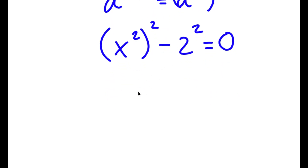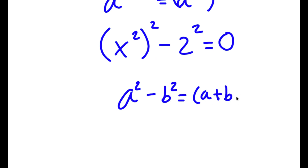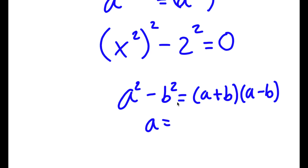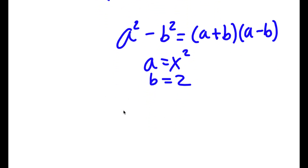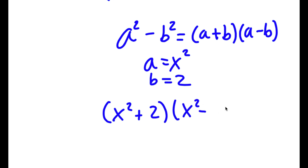Now if I have something in the form a squared minus b squared, this is equal to a plus b times a minus b. So in this case, a is x squared and b is 2. So now I have x squared plus 2 times x squared minus 2 is equal to 0.